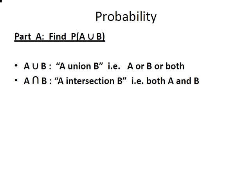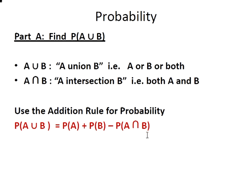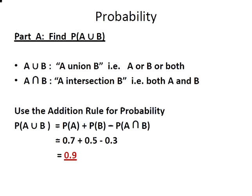We're going to use the addition rule for probability. The probability of A union B is the probability of A plus the probability of B minus the probability of A intersection B. The reason we subtract that is to stop it getting counted twice. Using our values — 0.7 for A, 0.5 for B, and 0.3 for A intersection B — the answer is 0.9.